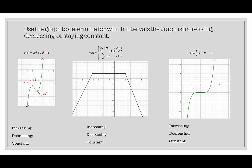After zero, the graph continues going up. So the two important turning points are (−1, −3) and (0, −4). The function is increasing from negative infinity to negative one. It's decreasing on the interval negative one to zero — remember we only use the x values. Then it's increasing again from zero to infinity. This one didn't have a constant interval, so we leave that blank.